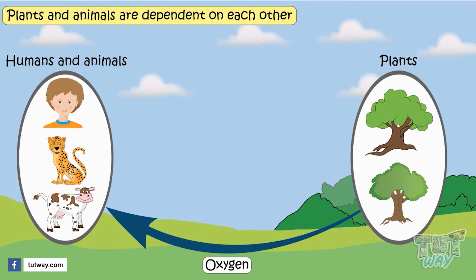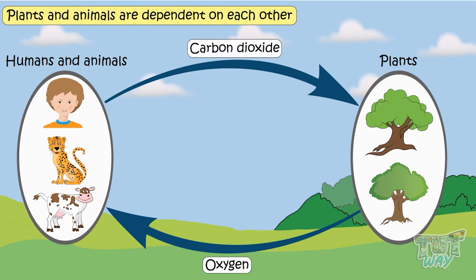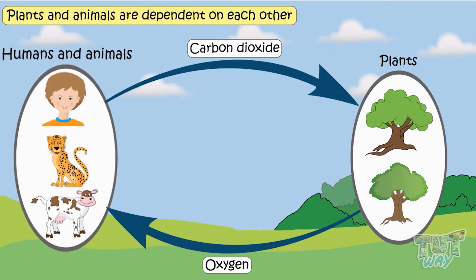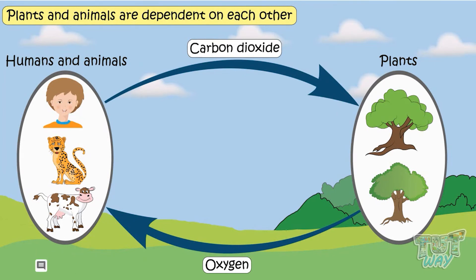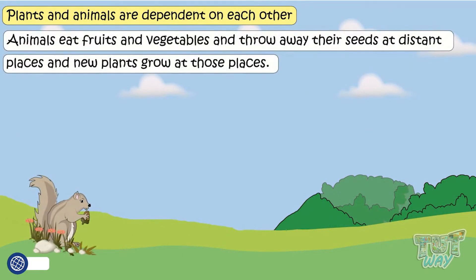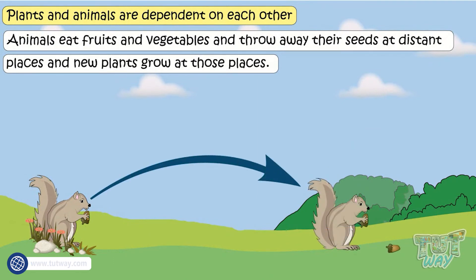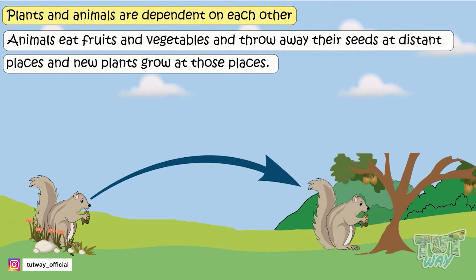But plants too need animals and humans. All plants need carbon dioxide to breathe in, just like we need oxygen to breathe in, and carbon dioxide is provided to plants by all animals and humans. As we breathe in oxygen and give out carbon dioxide, this carbon dioxide is used by plants. Also, animals help to spread the seeds of plants and trees, as animals eat fruits and vegetables and throw away their seeds at distant places, and new plants grow at those places.